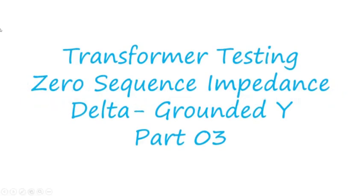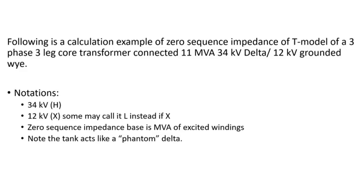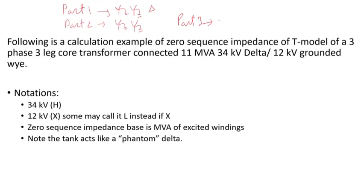Hello and welcome to Engineering Simple. This is part three on transformer testing — zero sequence impedance. Part one was on grounded Y / grounded Y, part two was on grounded Y / grounded Y with no delta, and part three covers the case where you have a delta high side and a grounded Y low side.